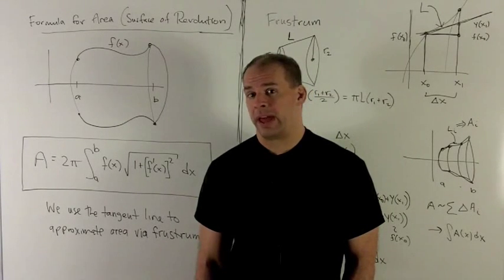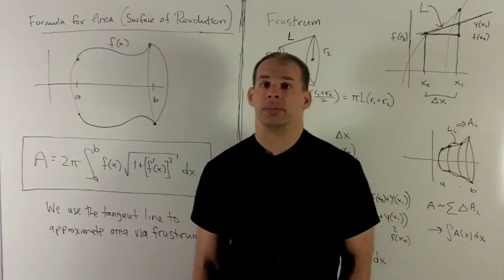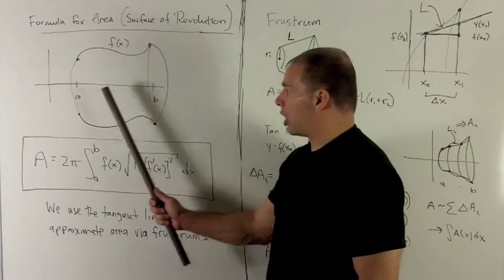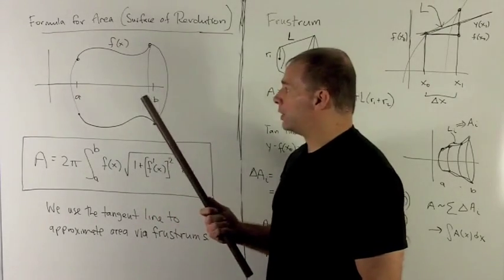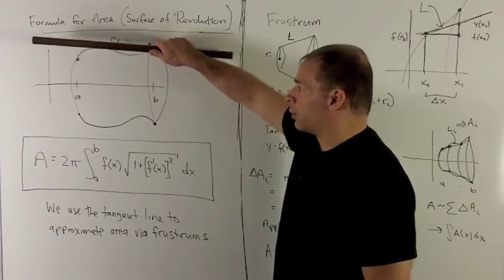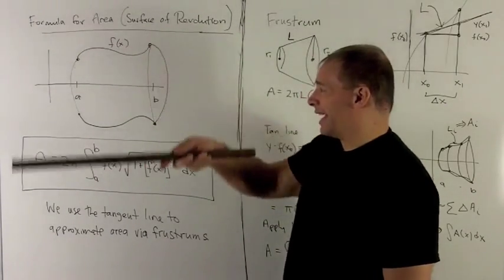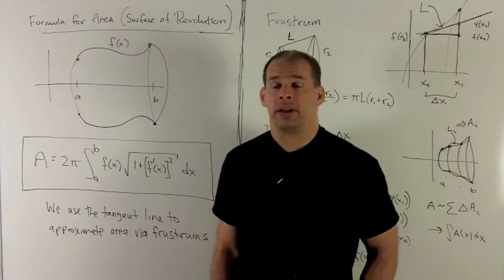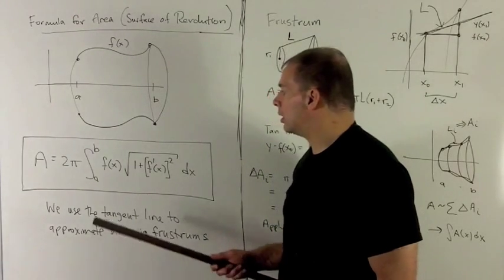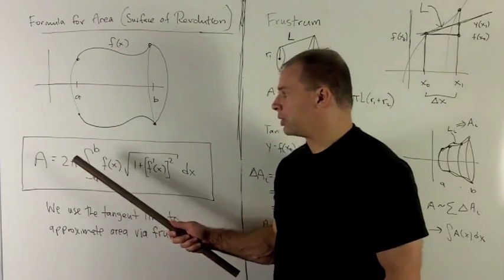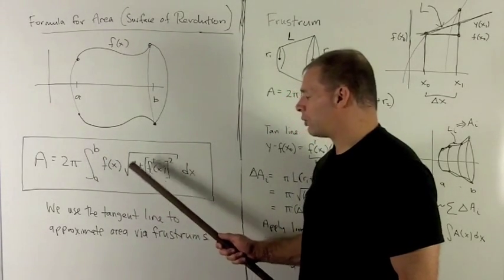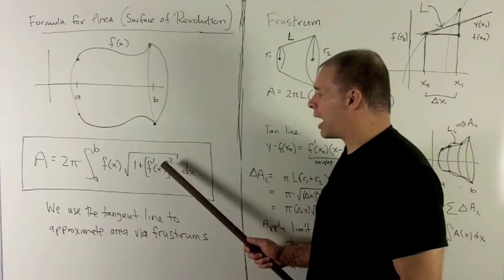Now we'll consider the formula for the area of a surface of revolution. I have my curve F, and we're going to go from A to B along the x-axis. We're taking the graph of F over A and B, revolving it around the x-axis — that's going to sweep out an area. Our formula is: A equals 2π times the definite integral from A to B of F(x) times the radical of 1 plus F′(x) squared, dx.